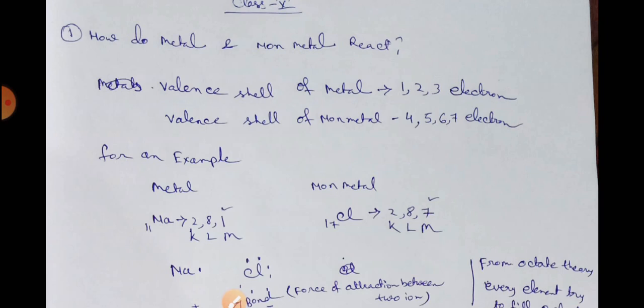If I take an example, metal and non-metal: metal is Na and non-metal is chlorine. We know the atomic number, sodium is 11, and in the case of chlorine, the atomic number is 17.